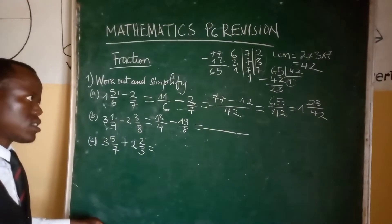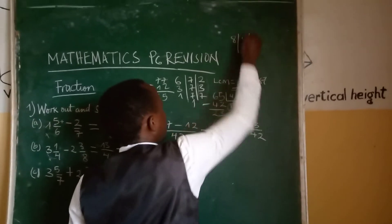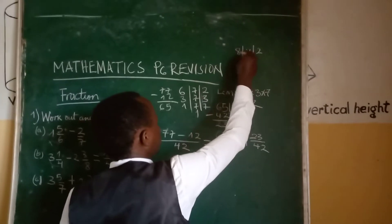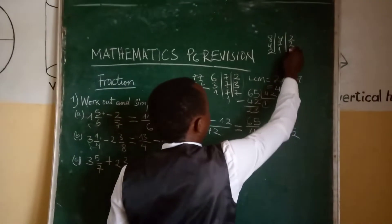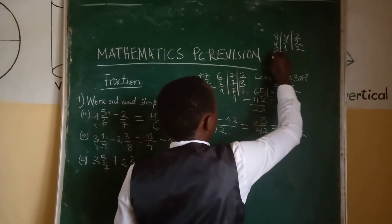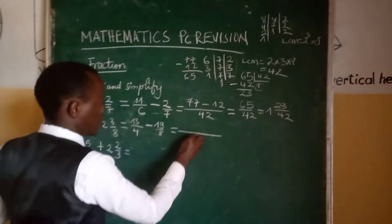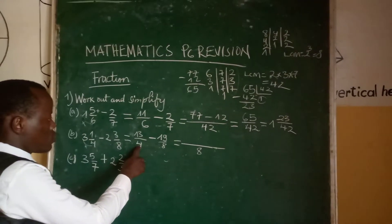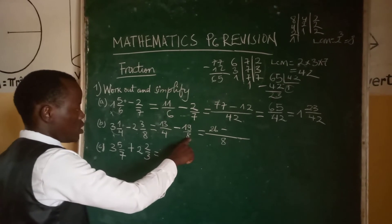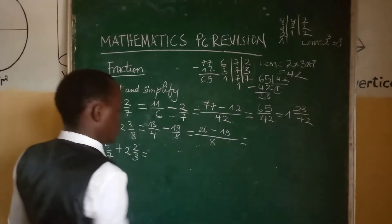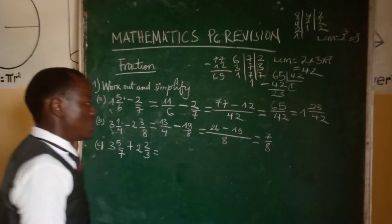We find the lowest common multiple of 4 and 8 by prime factorization. Dividing by 2: 4 divided by 2 equals 2, and 8 divided by 2 equals 4. Dividing by 2 again: 2 divided by 2 equals 1, and 4 divided by 2 equals 2. Dividing by 2 again: 1 and 2 divided by 2 equals 1. So LCM equals 2 to the power 3, which equals 8. Then: 8 divided by 4 equals 2, and 2 times 13 equals 26. Minus: 8 divided by 8 equals 1, and 1 times 19 equals 19. So 26 minus 19 equals 7, and the answer is 7 over 8.